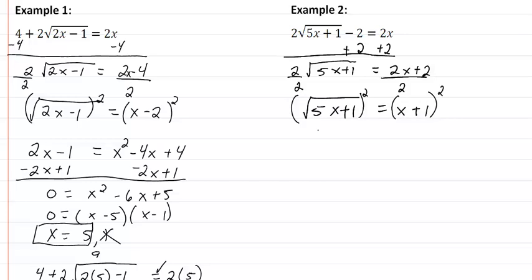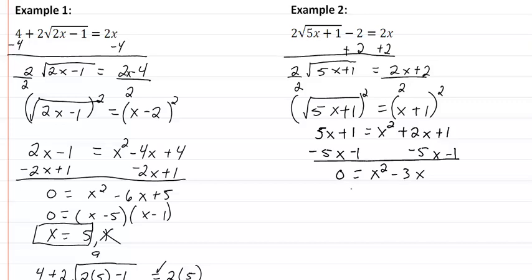Now we have 5x plus 1 equal to x squared plus 2x plus 1. Move everything over. And we get 0 equals x squared minus 3x. Well, we can factor this easy enough. So we have x times x minus 3. So we're going to get x is equal to 0 and 3. So now we need to check those.